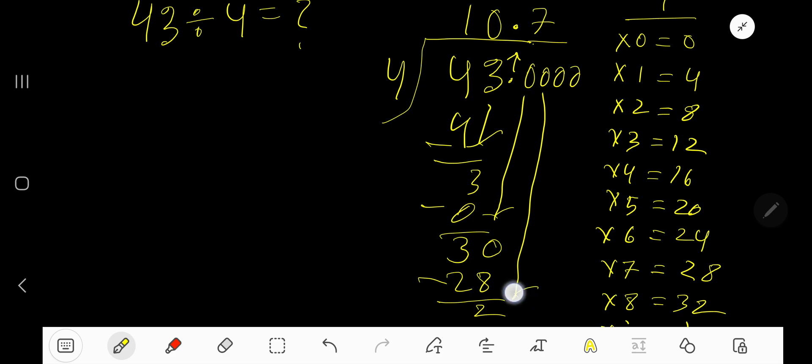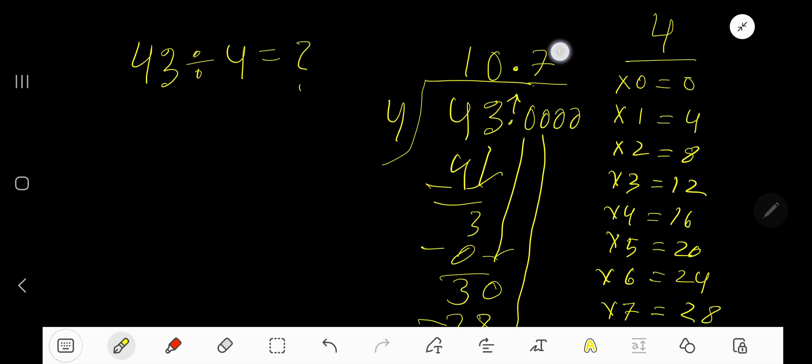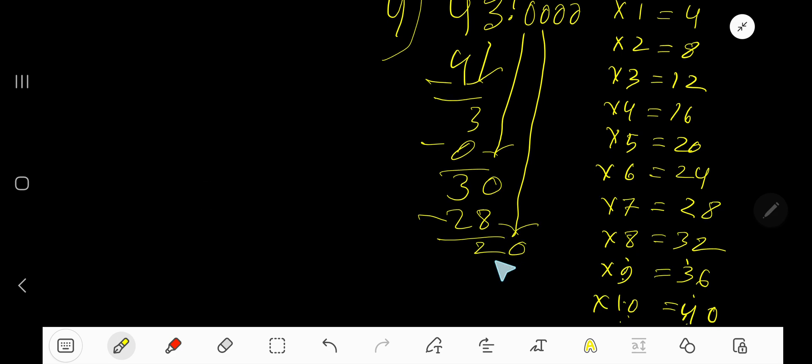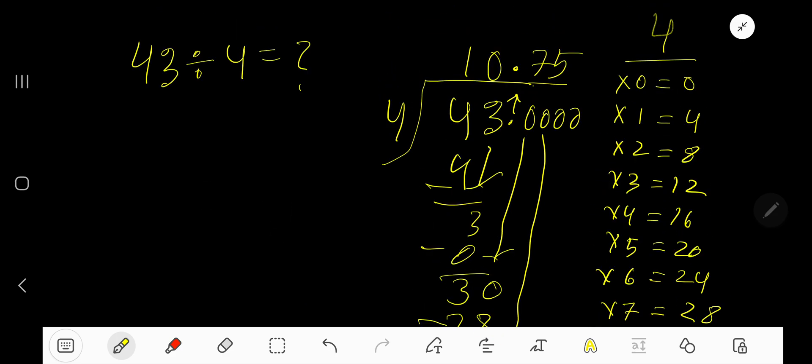Bring down another 0. So 20. 4 goes into 20 how many times? 5 times. 5 times 4 is 20. Subtract, you are getting 0. As our remainder is 0, we are done. So our answer is 10.75.